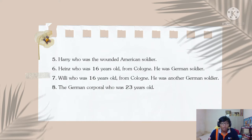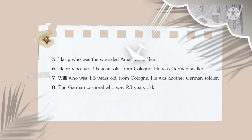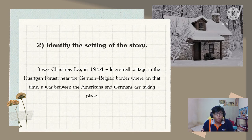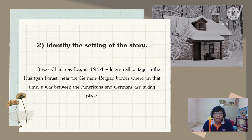The eighth and last character is the German corporal, who was 23 years old. For Question 2, identifying the setting of the story: it was Christmas Eve in 1944, in a small cottage in the Huyken Forest, near the German-Belgian border, where at that time a war between Americans and Germans was taking place.